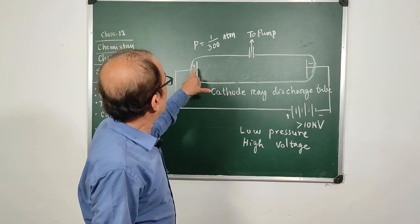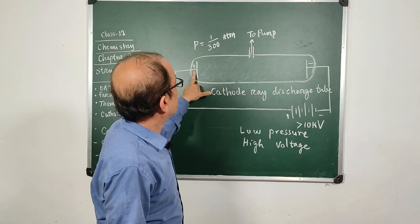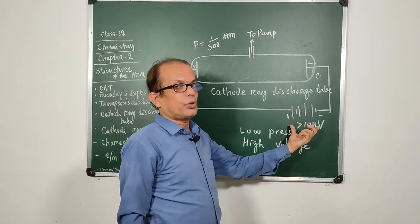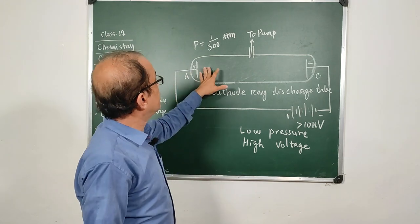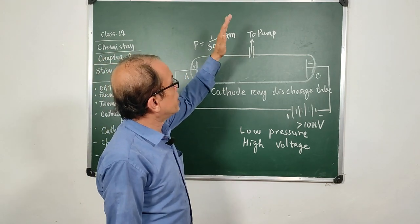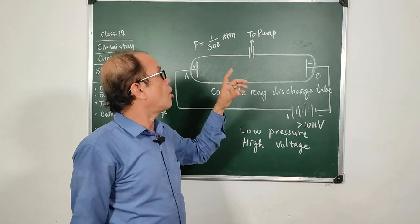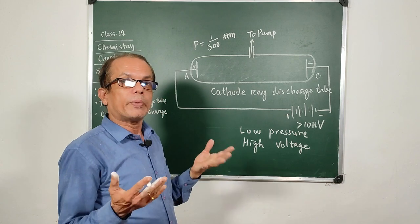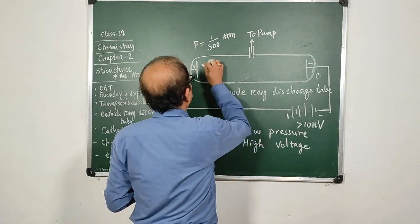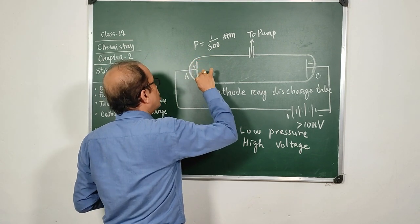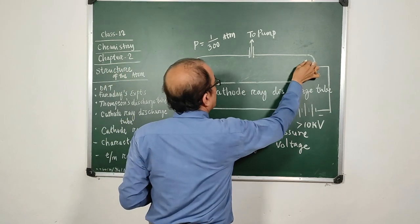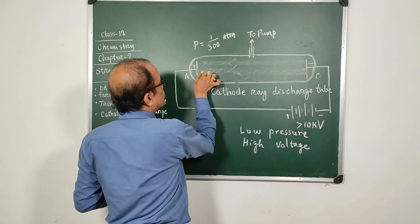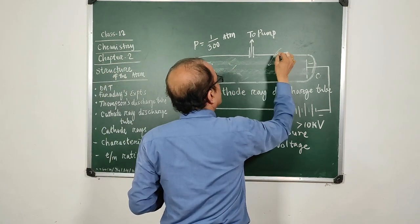He took two oppositely charged electrodes — one anode and one cathode — and connected the two ends to a very high voltage of the order of 10,000 volts, with a pump set connected to minimize the pressure to 1/300 atmospheric pressure. At this very low pressure and very high voltage, he saw a tremendous new result: there was a glow, as if a ray was coming from the cathode towards the anode.